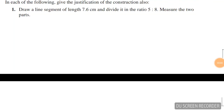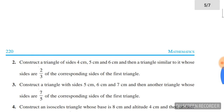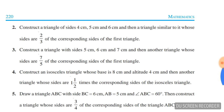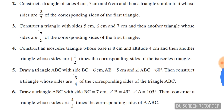Constructions practice: these constructions are for four marks. Draw a line segment of length 7.6 cm and divide it in the ratio 5:8. Measure the two parts.